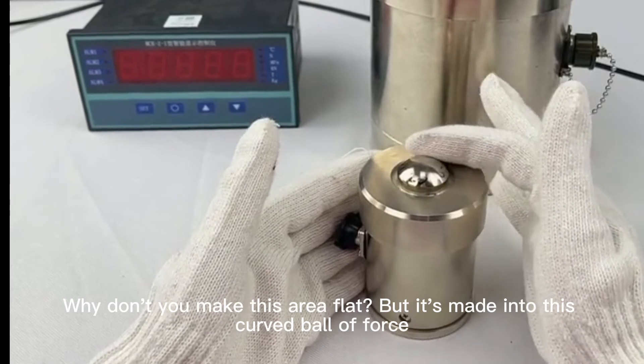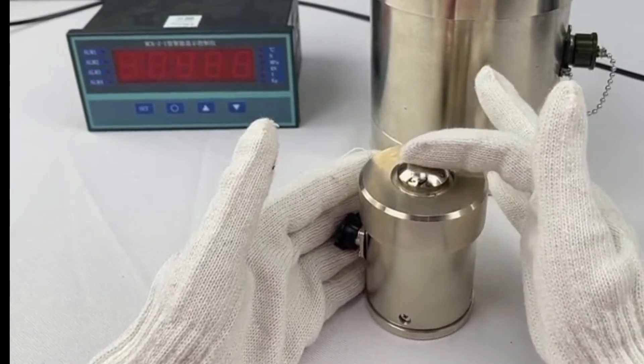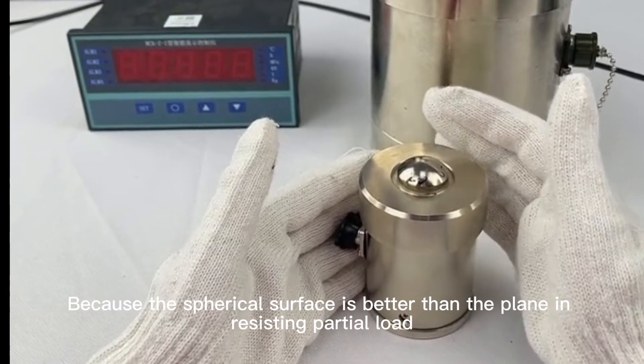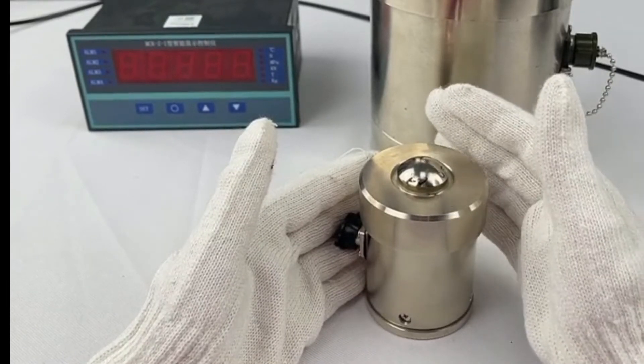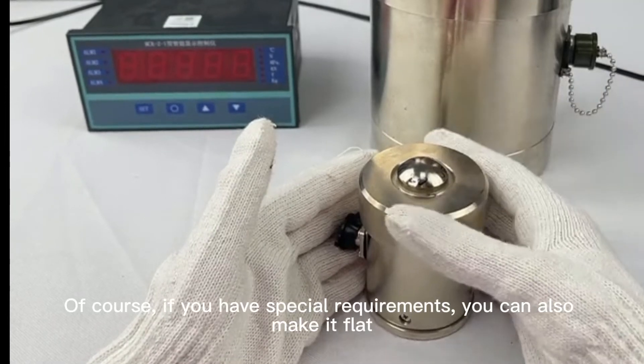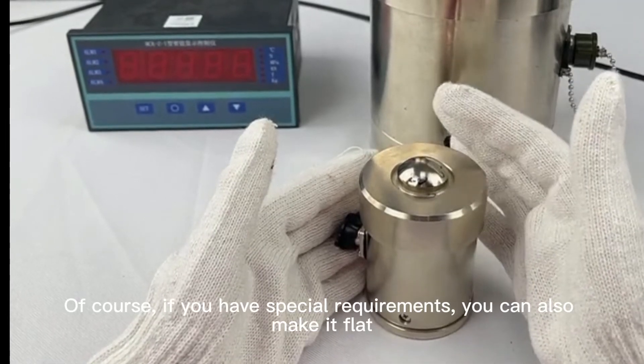Why don't you make this area flat? But it's made into this curved ball of force. Because the spherical surface is better than the plane in resisting partial load. Of course, if you have special requirements, you can also make it flat.